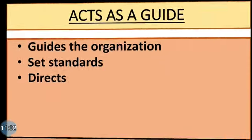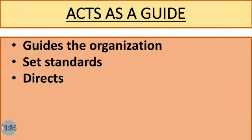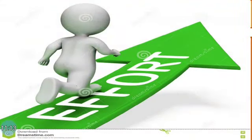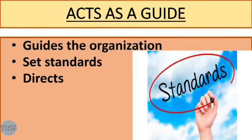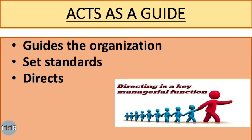Controlling also acts as a guide. The control system guides the actions of the organization. Organizational heads take efforts to set standards and direct subordinates on how to achieve their targets. Here, managers as well as subordinates both work together and try their best to reach the goal. Through the controlling function, activities are undertaken in the right direction and keep the organizational activities moving on the right track.